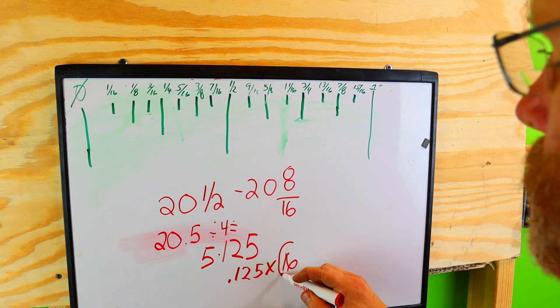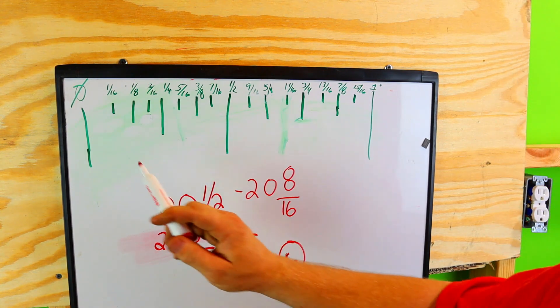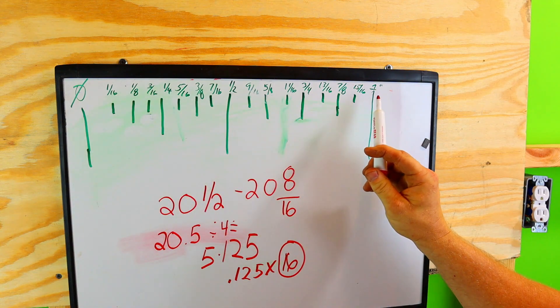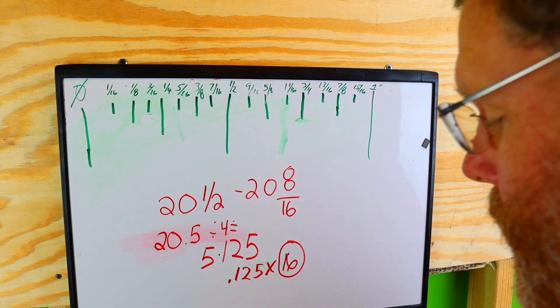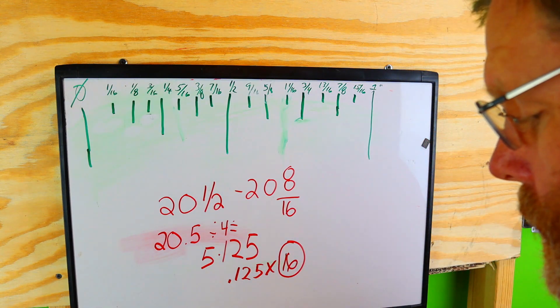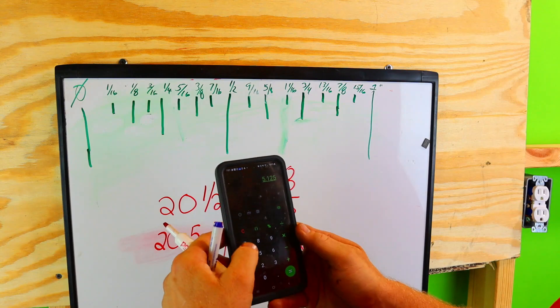Now why do you do it by 16? Let's look at this. Why is it 16? Because there's 16 marks here from zero to one inch. There's 16 marks.